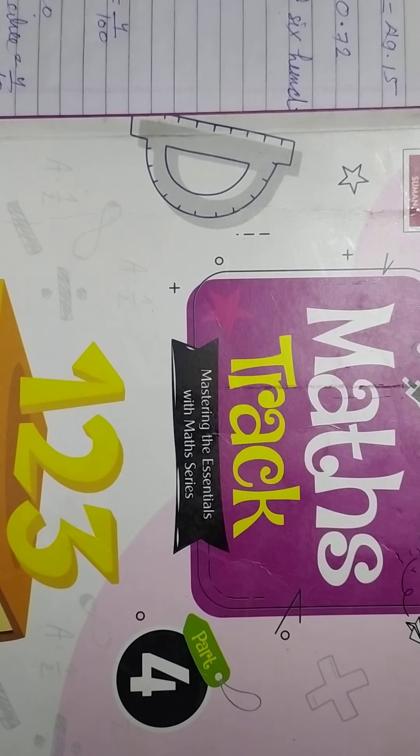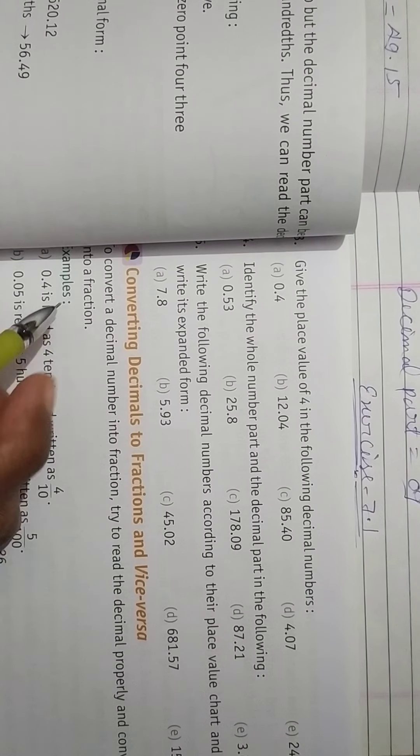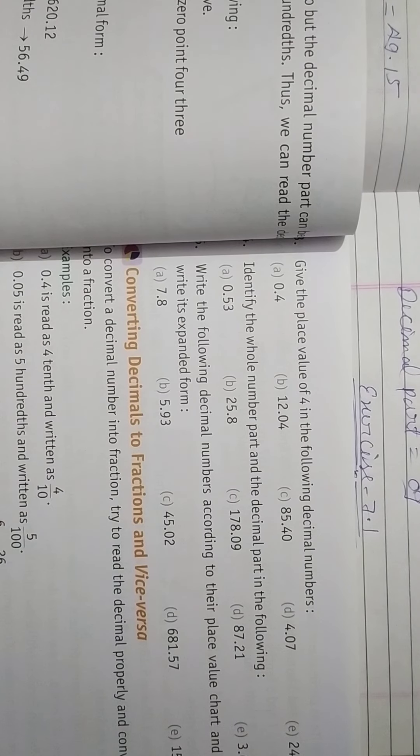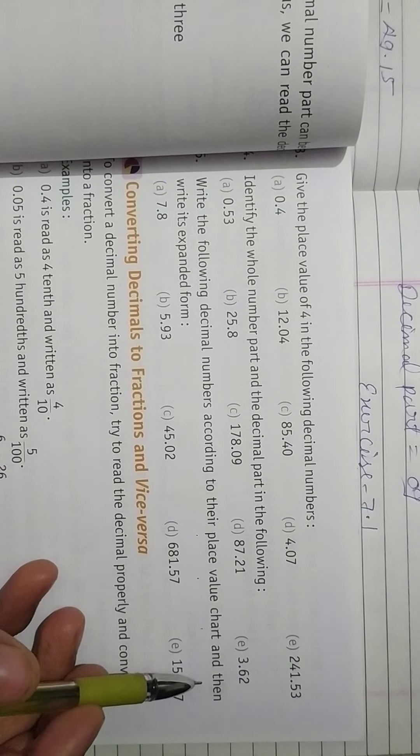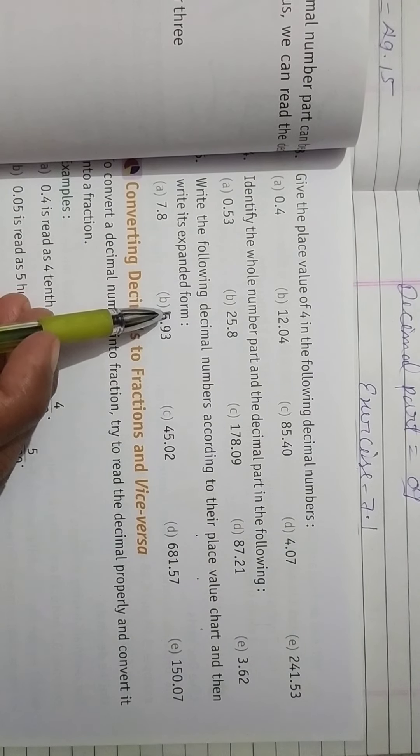So students, as we know that we have completed 4 questions of exercise 7.1 and today we will start question number 5. So question number 5 is, write the following decimal numbers according to their place value chart and then write its expanded form.